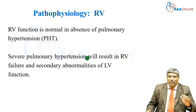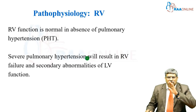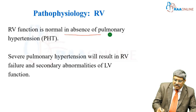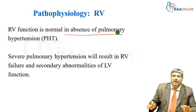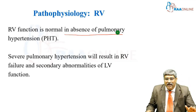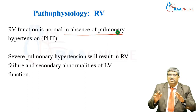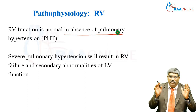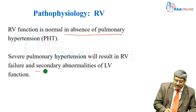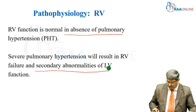Coming to the right ventricle, it is usually normal in the absence of pulmonary hypertension. But if pulmonary hypertension sets in, there is going to be oxygen supply-demand imbalance as well as a secondary abnormality of the left ventricle.